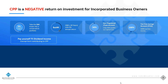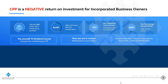If you pay yourself T5 dividend income instead of a T4 salary, you're actually exempt from contributing to the Canada Pension Plan. You are in control and you get to withdraw the money on your terms. And when you pass away, it rolls over to your spouse, and upon your spouse passing away there is an estate for your beneficiaries.